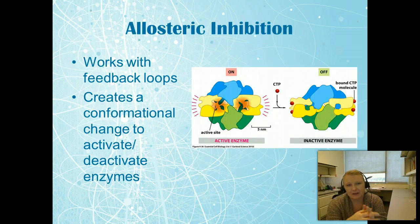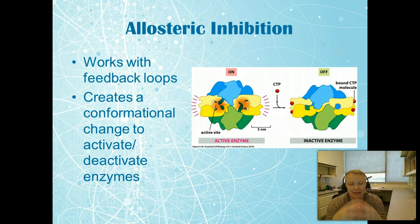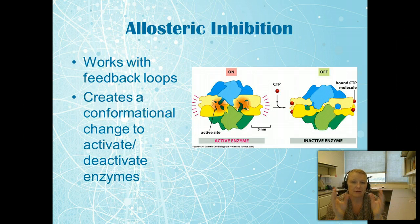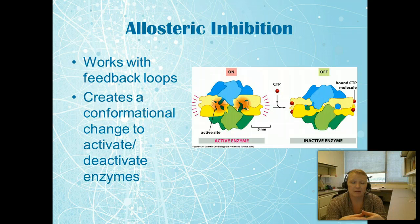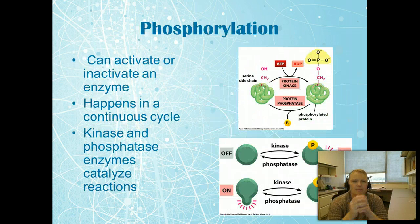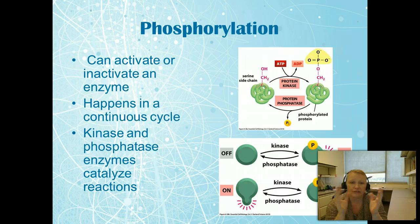Allosteric inhibition works with feedback loops — the cell will go in and turn off an enzyme by binding to it, changing its conformational shape so the active site is no longer available. You can see here how CTP binds to the allosteric sites, turning off the active site so the substrate can no longer bind. This deactivates enzymes and is almost always associated with a feedback loop.